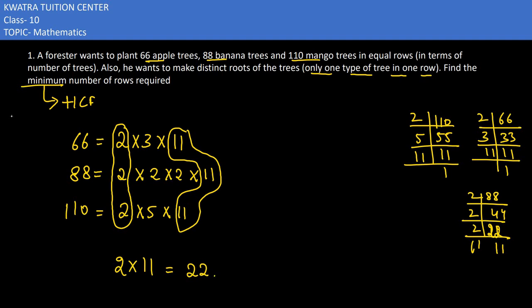Which is 22. The minimum number of rows required for 66, for 88, for 110 would be 22. The common factor is 22.